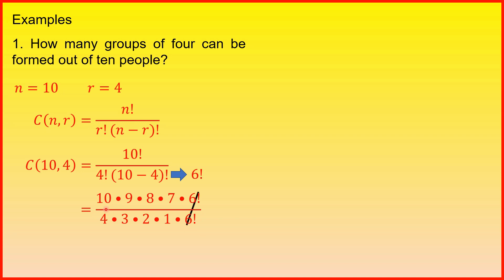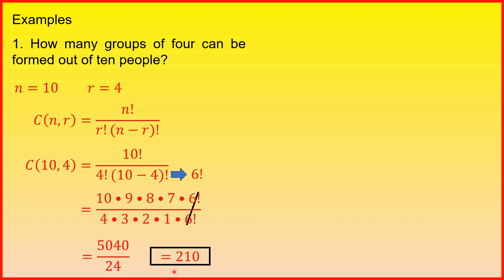Then, multiply na natin yung mga numbers sa numerator na 10, 9, 8, and 7. And that is equal to 5,040. At ang ating denominator na 4 times 3 times 2 times 1 is equal to 24. Dividing these two numbers, and that is equal to 210. So, ang sagot natin ay 210.